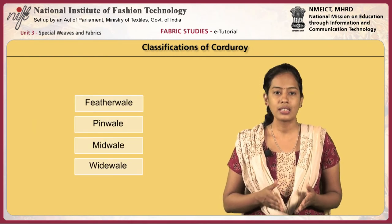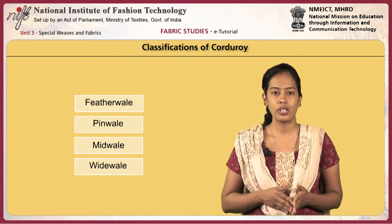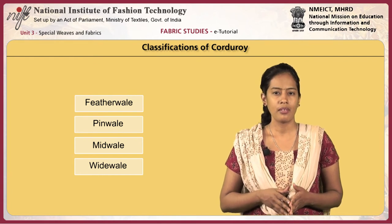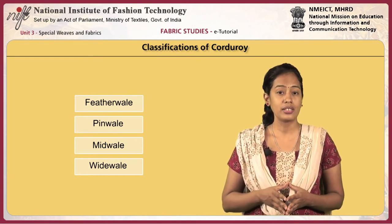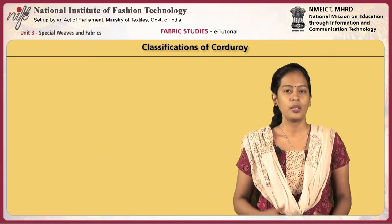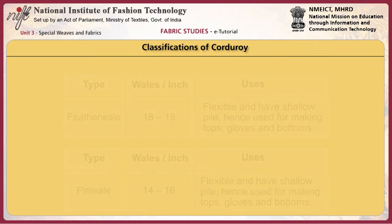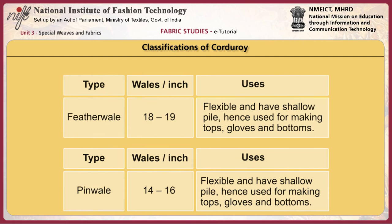Corduroys are classified based on the wales per inch in the fabric and meant for various end uses accordingly. Various types include feather wale, with 18 to 19 wales per inch, which is flexible and has shallow pile, hence used for making tops, gloves, and bottoms. Pin wale, with 14 to 16 wales per inch, is also flexible and has shallow pile, used for making tops, gloves, and bottoms.